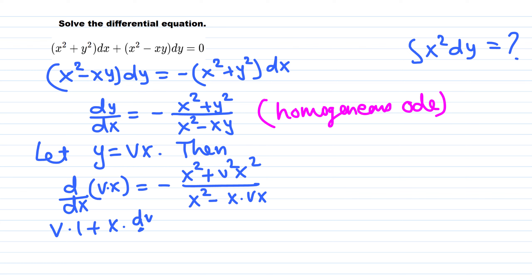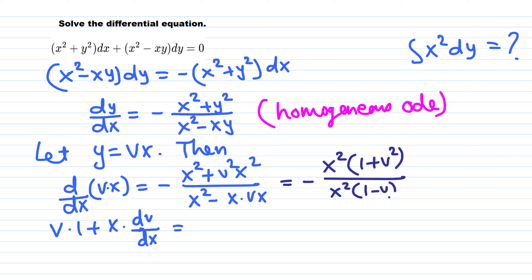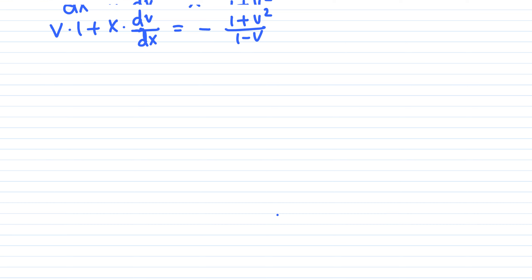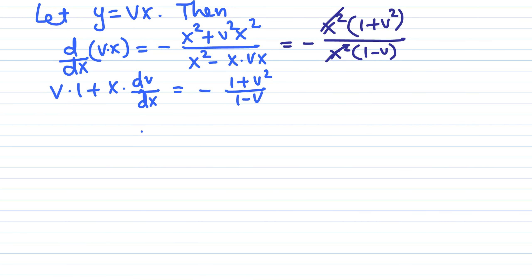Applying the product rule: v times 1 plus x times dv over dx. On the right-hand side, we simplify: on the top we factor out x squared, leaving negative one plus v squared; on the bottom x squared factors out leaving one minus v, and the x squared cancels. So we are left with negative one plus v squared over one minus v.